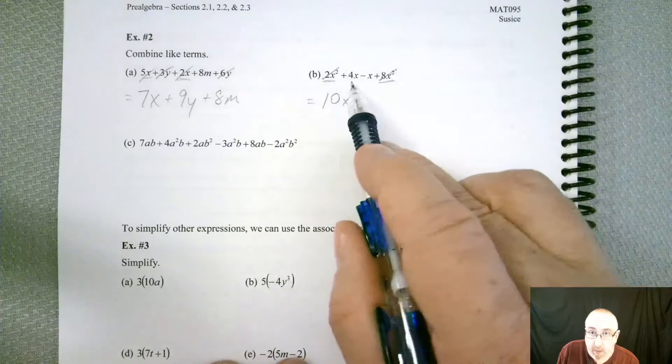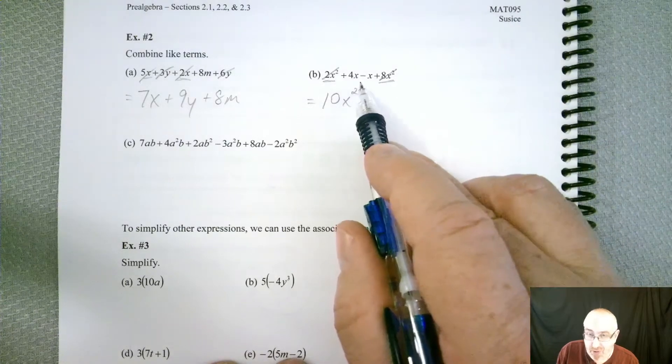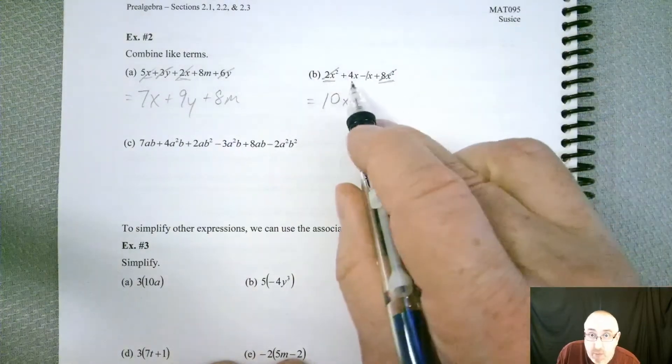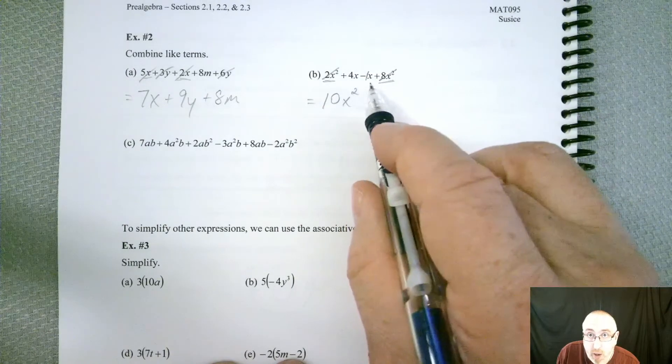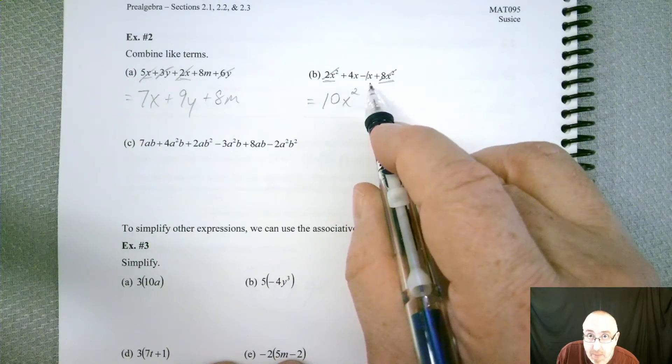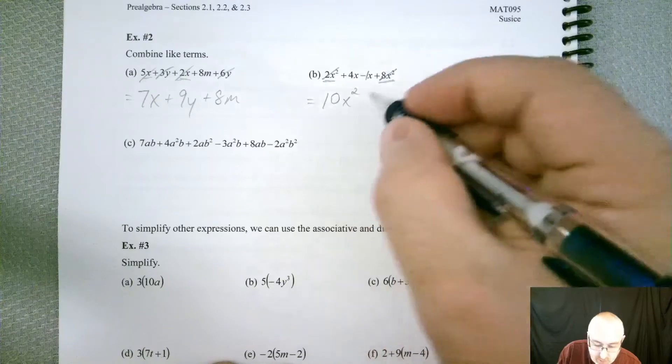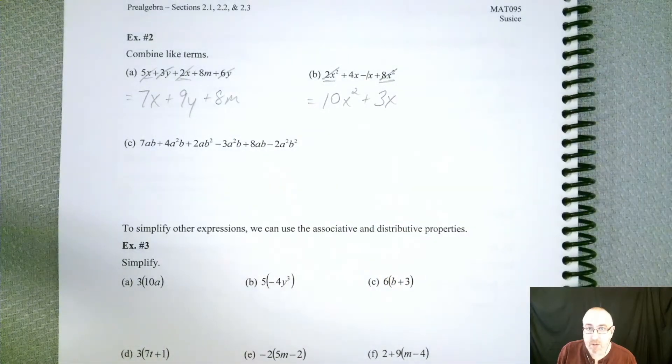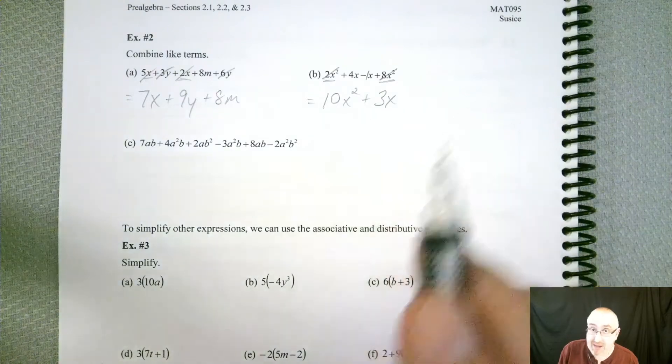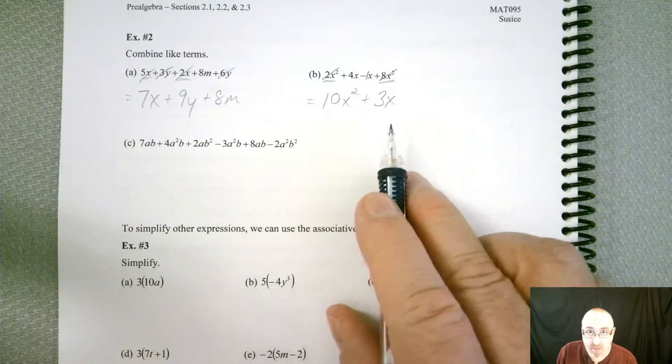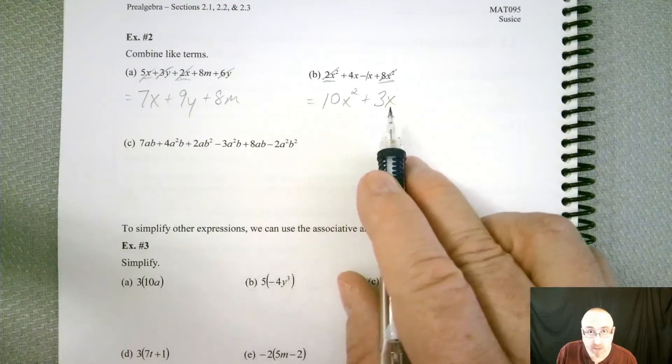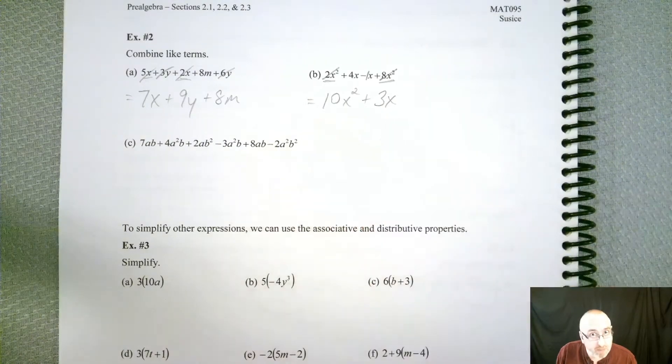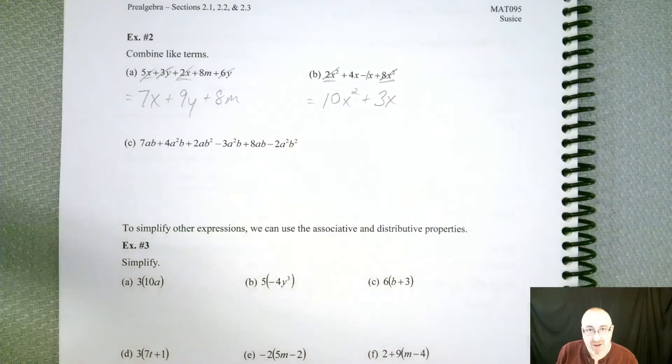And now, here's where that coefficient of 1 comes in handy. If you've got 4 apples and you take away 1 of the same type of apple, how many apples do you have left? You better have 3, right? So 3x. And that's it. You can't combine that any further because one has an exponent and one doesn't. I know it's frustrating, but you can't do it.